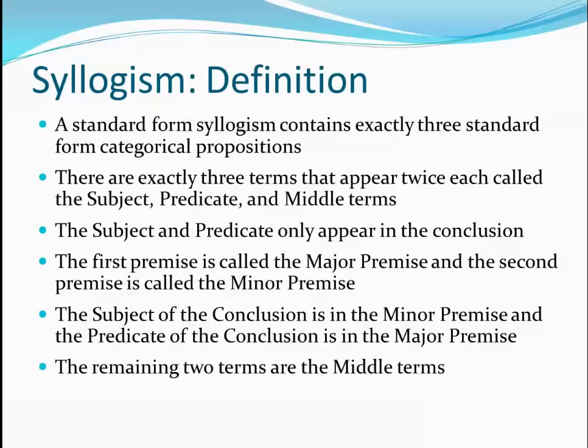The subject and predicate only appear in the conclusion. The first premise is called the major premise and the second premise is called the minor premise. The subject of the conclusion is in the minor premise, and the predicate of the conclusion is in the major premise. However, just because an argument is in standard form does not mean it is a valid argument — the form just allows us to evaluate the argument to see if it's valid.